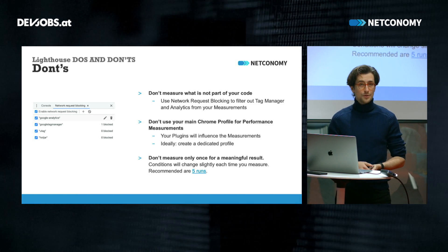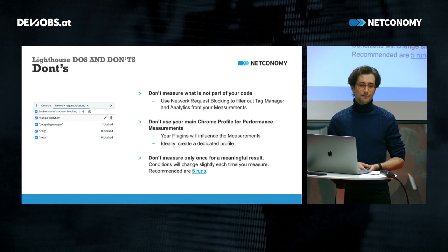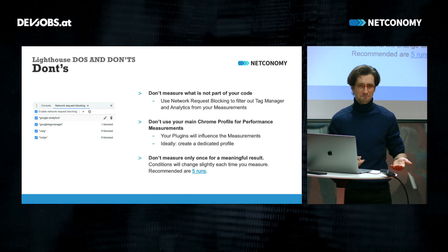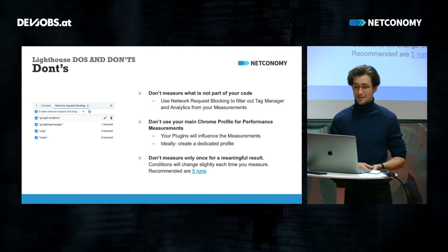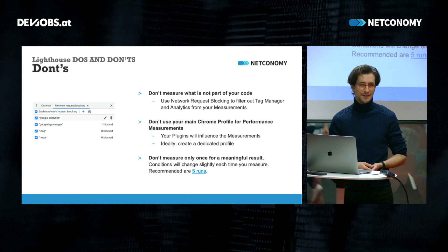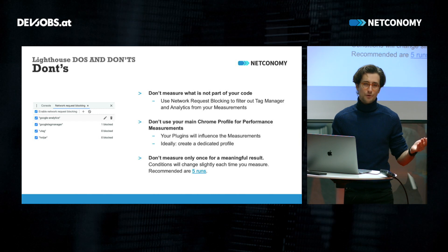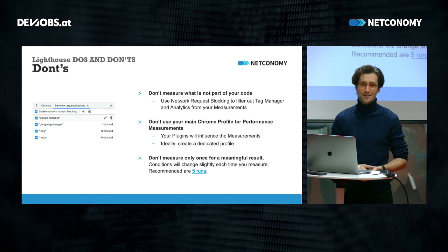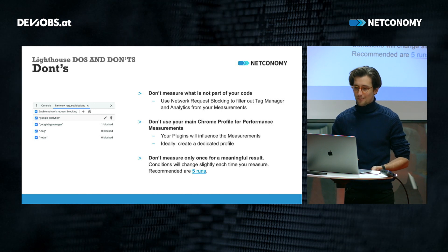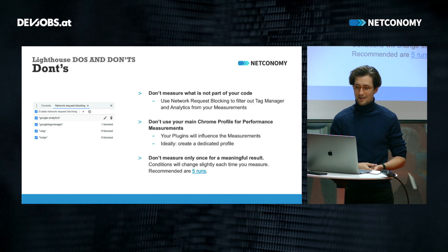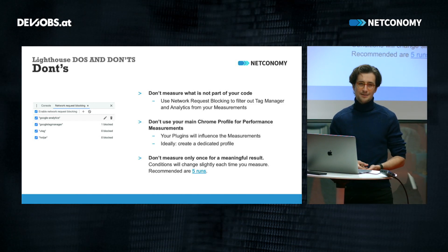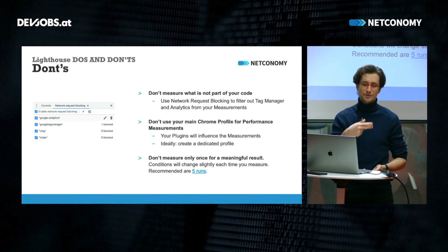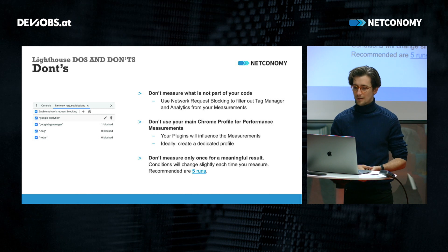Next thing: don't use your main Chrome profile for performance measurements. This should be pretty clear, but still a lot of people don't do it. Set up a Chrome profile, give it a nice punchy color so you know this is your performance measurement profile. Disable all the plugins. It will help you not only with measuring performance, but also when you go into the details of your analysis as well.